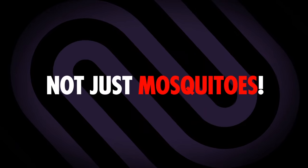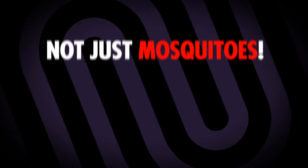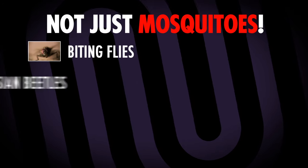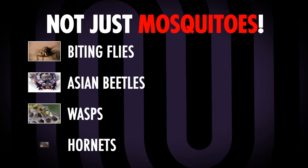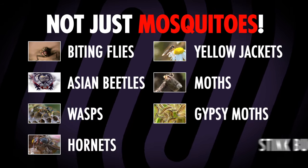But Dynatrap does much more than just trap mosquitoes. It also traps a wide variety of flying insects, including biting flies, Asian beetles, wasps, hornets, yellow jackets, moths, gypsy moths, and stink bugs.